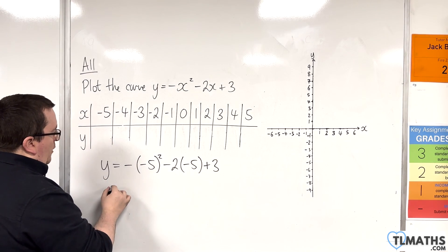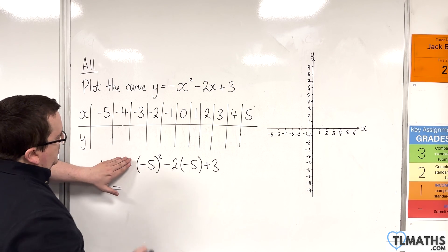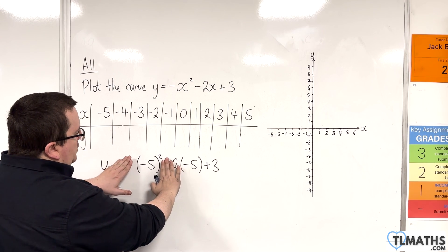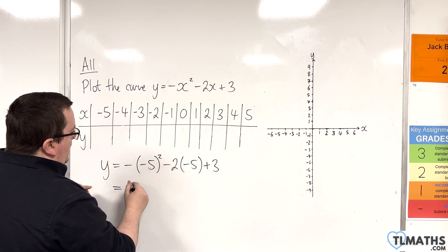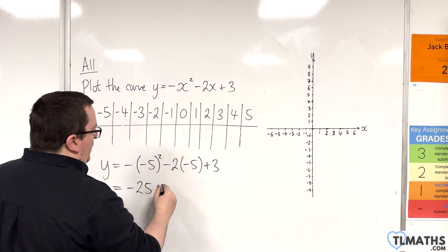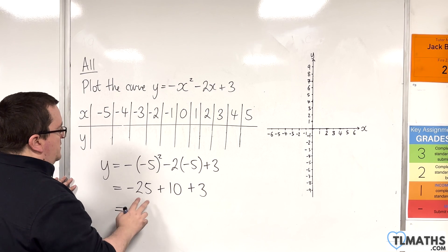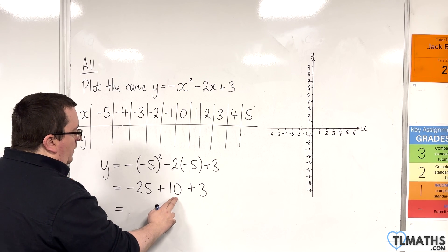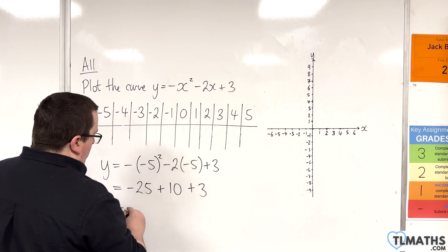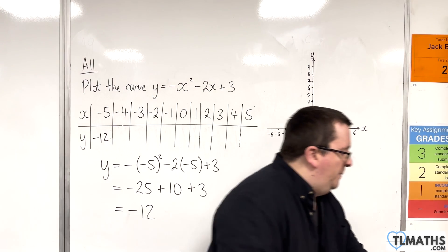Now you're welcome to use a calculator here. I'm just going to do this first one by hand. So we've got minus 5 squared which is 25, take away 25 so minus 25, then take away 2 lots of minus 5 so plus 10 and then plus 3. So minus 25 plus 10 is minus 15, add 3 is minus 12. So the first one is minus 12.